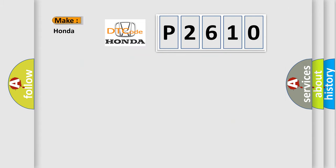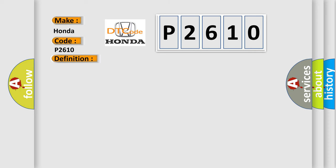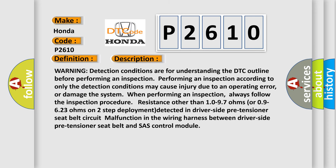So, what does the diagnostic trouble code P2610 interpret specifically for Honda car manufacturers? The basic definition is: Driver side pre-tensioner seat belt circuit short to body ground. Warning detection conditions are for understanding the DTC outline before performing an inspection. Performing an inspection according to only the detection conditions may cause injury due to an operating error, or damage the system. Always follow the inspection procedure. Resistance other than 10-97 ohms or 09-623 ohms on two-step deployment detected indicates a driver side pre-tensioner seat belt circuit malfunction in the wiring harness between the driver side pre-tensioner seat belt and the SRS control module.